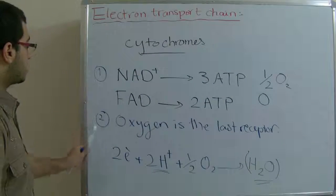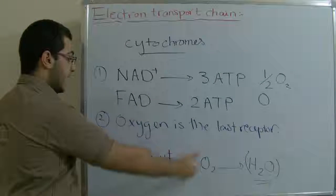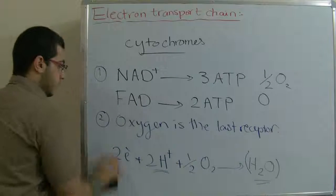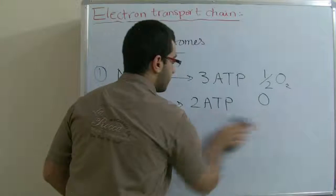So these are the two steps of electron transport chain. Energy is released and water is produced. So let's calculate the amount of energy produced from the whole aerobic respiration.